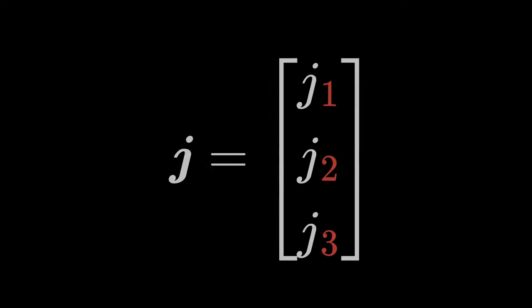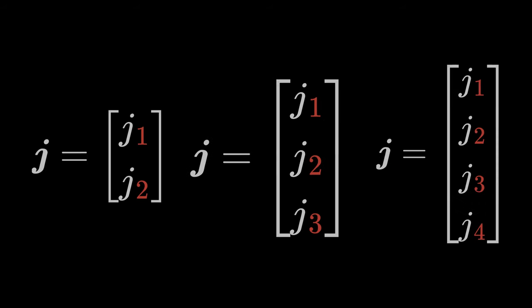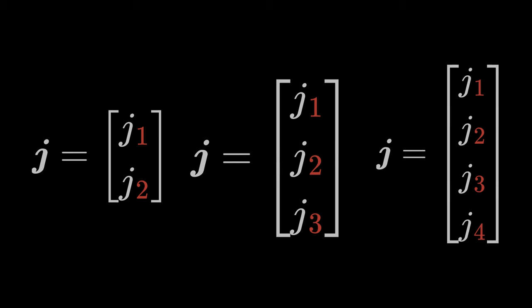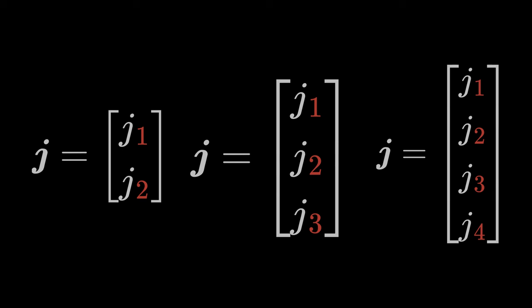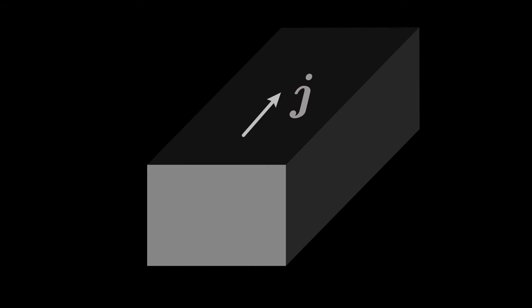Of course, the vector can also describe two components or more than three components, as is the case in the general theory of relativity where we work with tensors in a four-dimensional space-time. This first-order tensor can, for example, describe the current density in a wire.